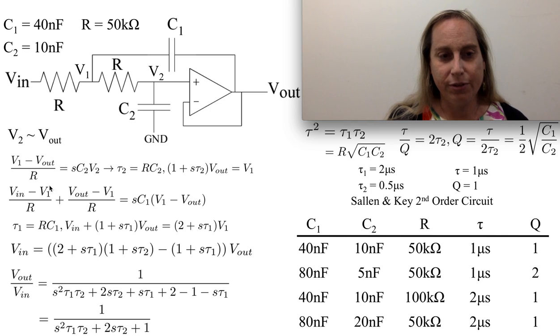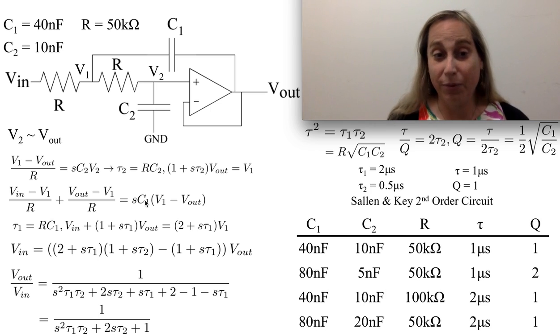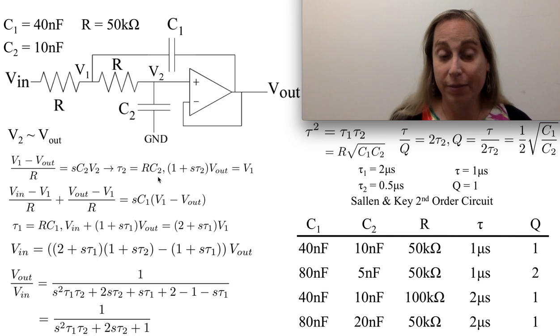KCL at V1 gives you three different terms. You pull them together. Now, realizing they have the same R, allows you to multiply all sides by R, which then gives you sC1R, which then says, hey, that's probably one of the time constants, and I'm going to use R times C2 as a second time constant. So now I've got two time constants to play with.